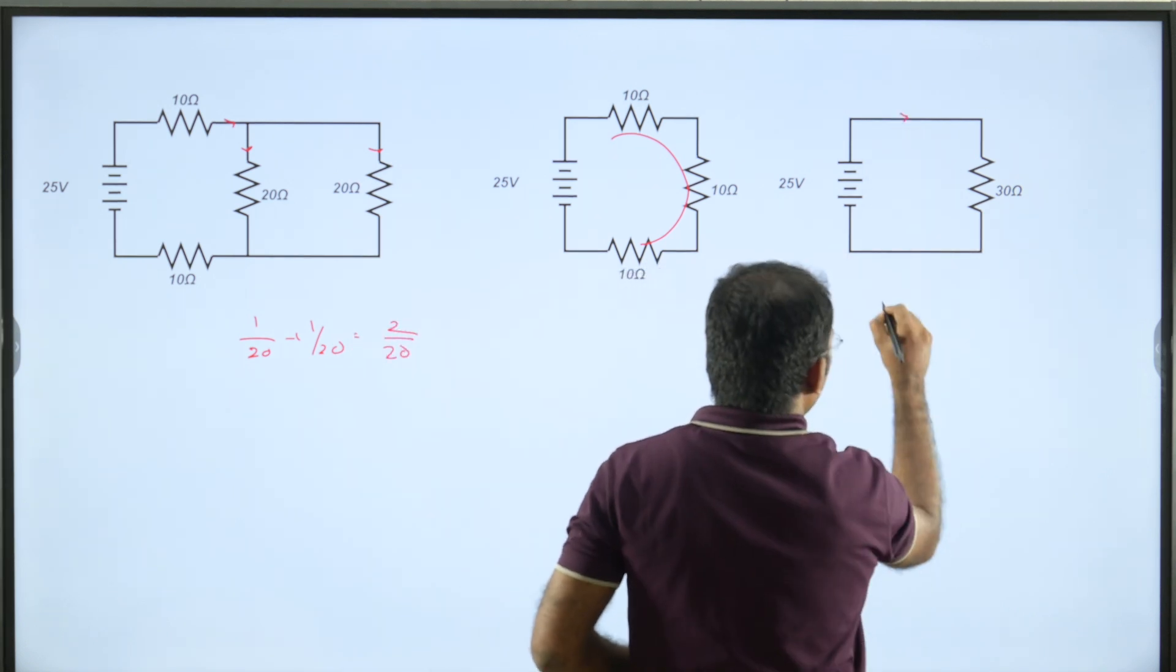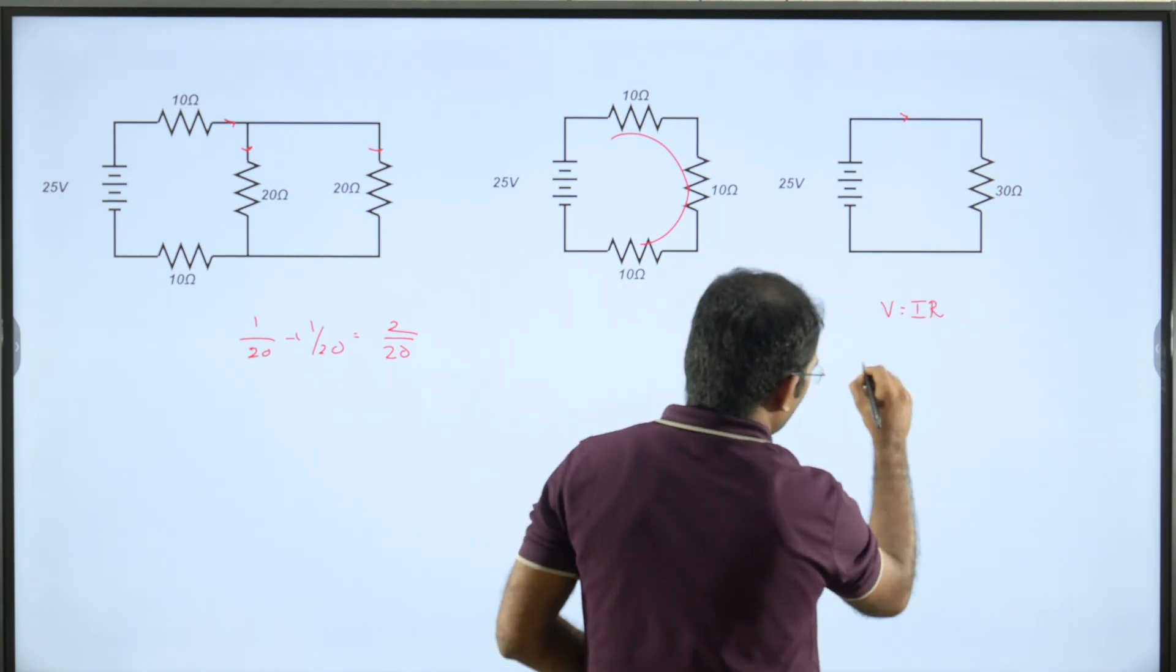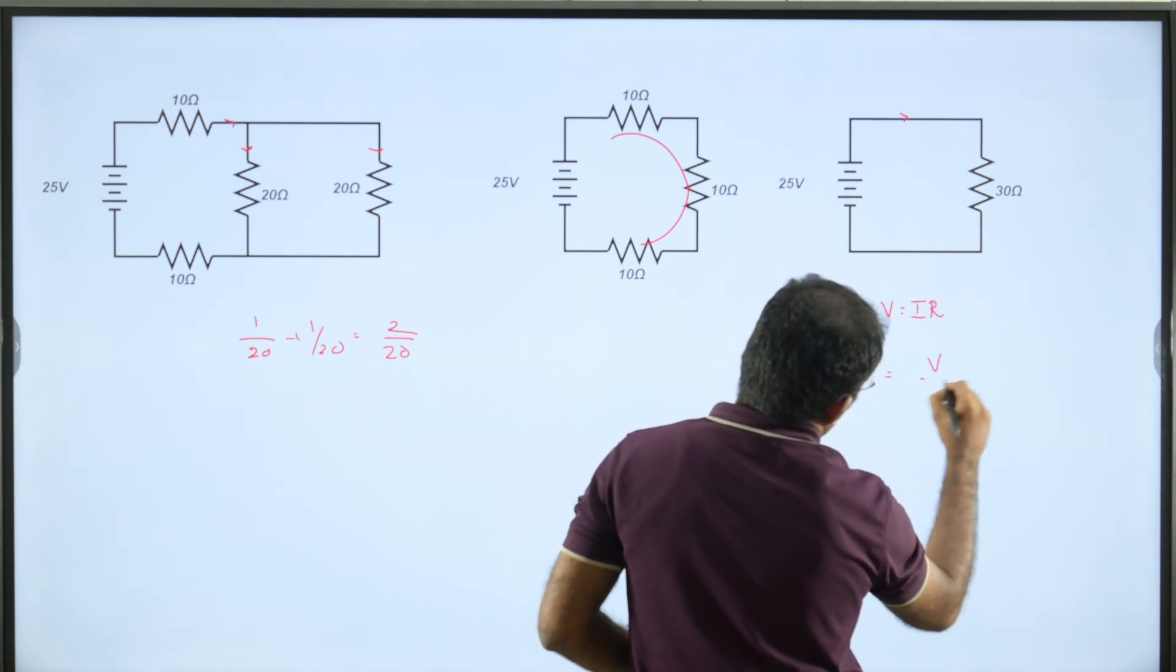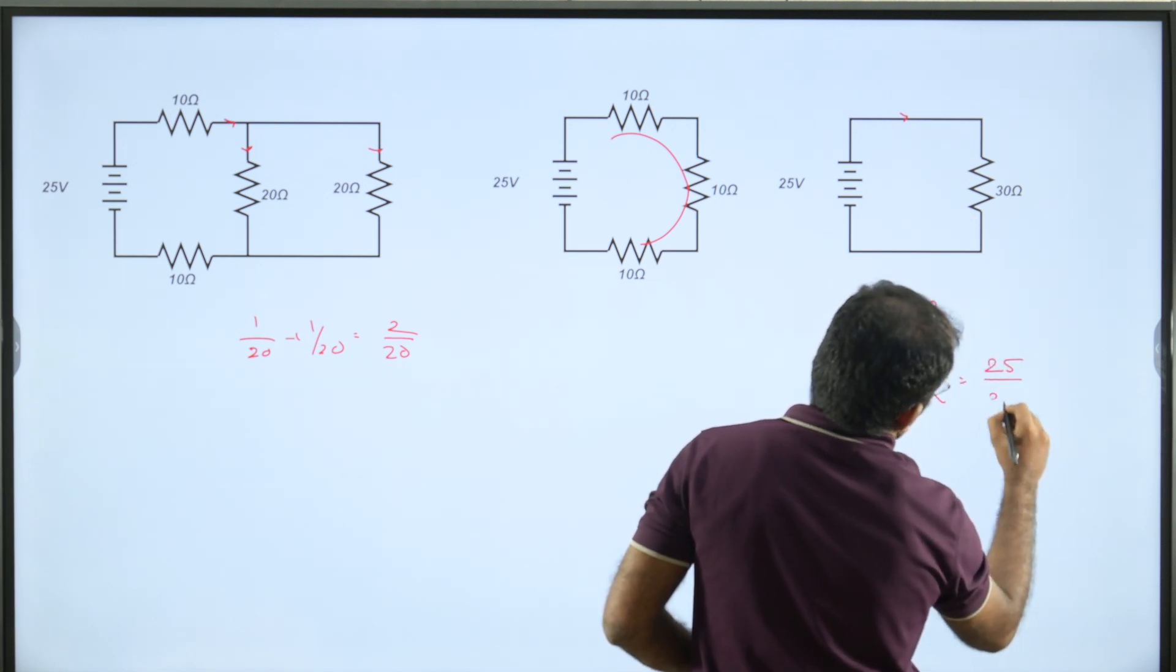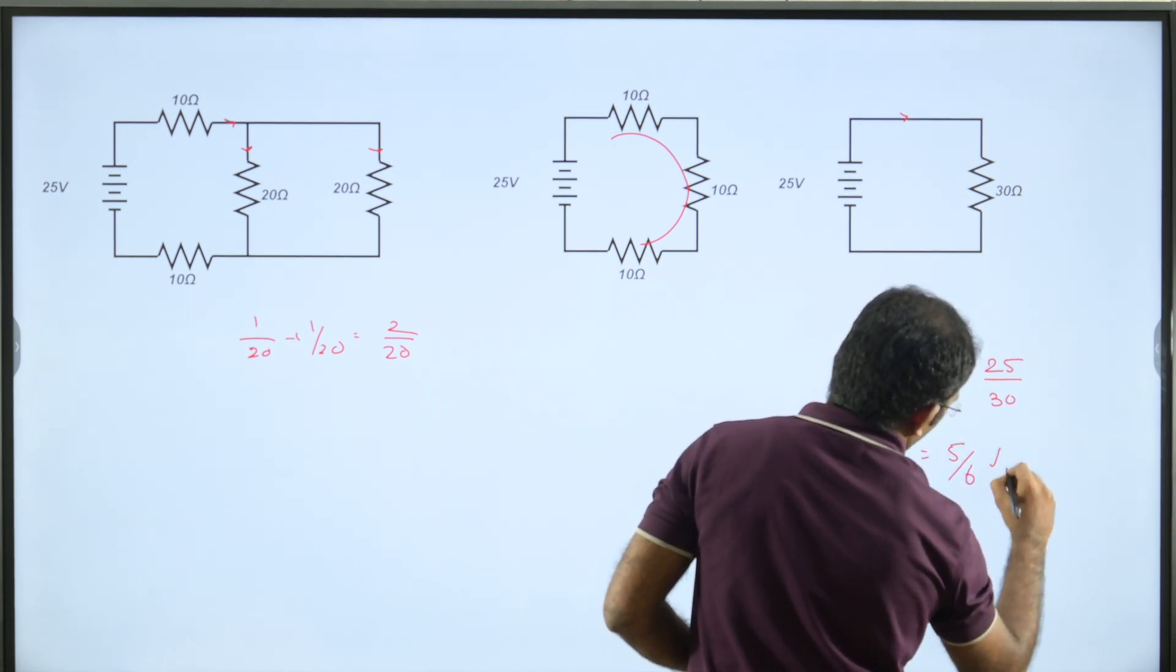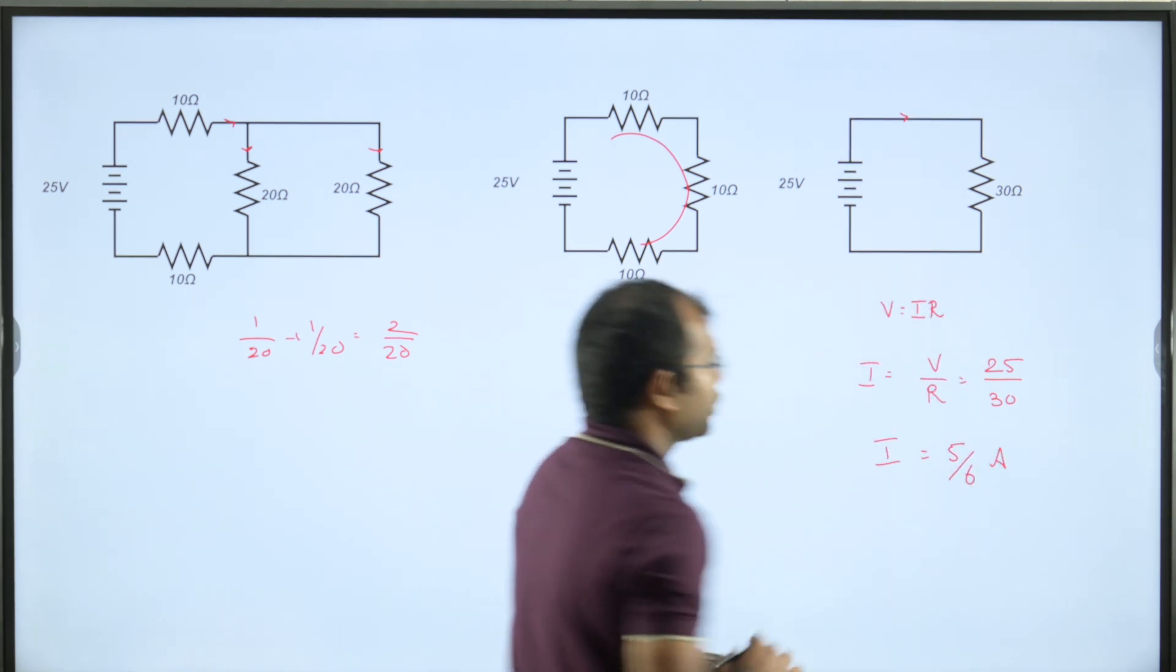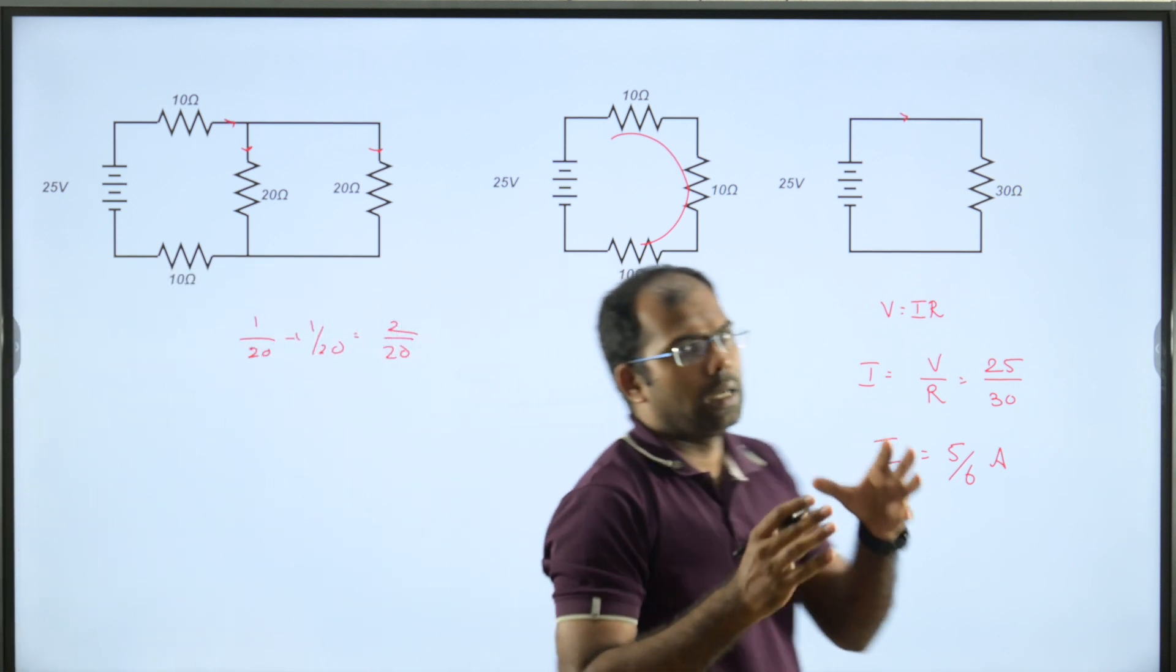Now I have only one resistor. We know that V equals IR. According to Ohm's law, I equals V by R, which equals 25 by 30, which is 5 by 6 amps. So the net current in the circuit equals 5 by 6 amps.